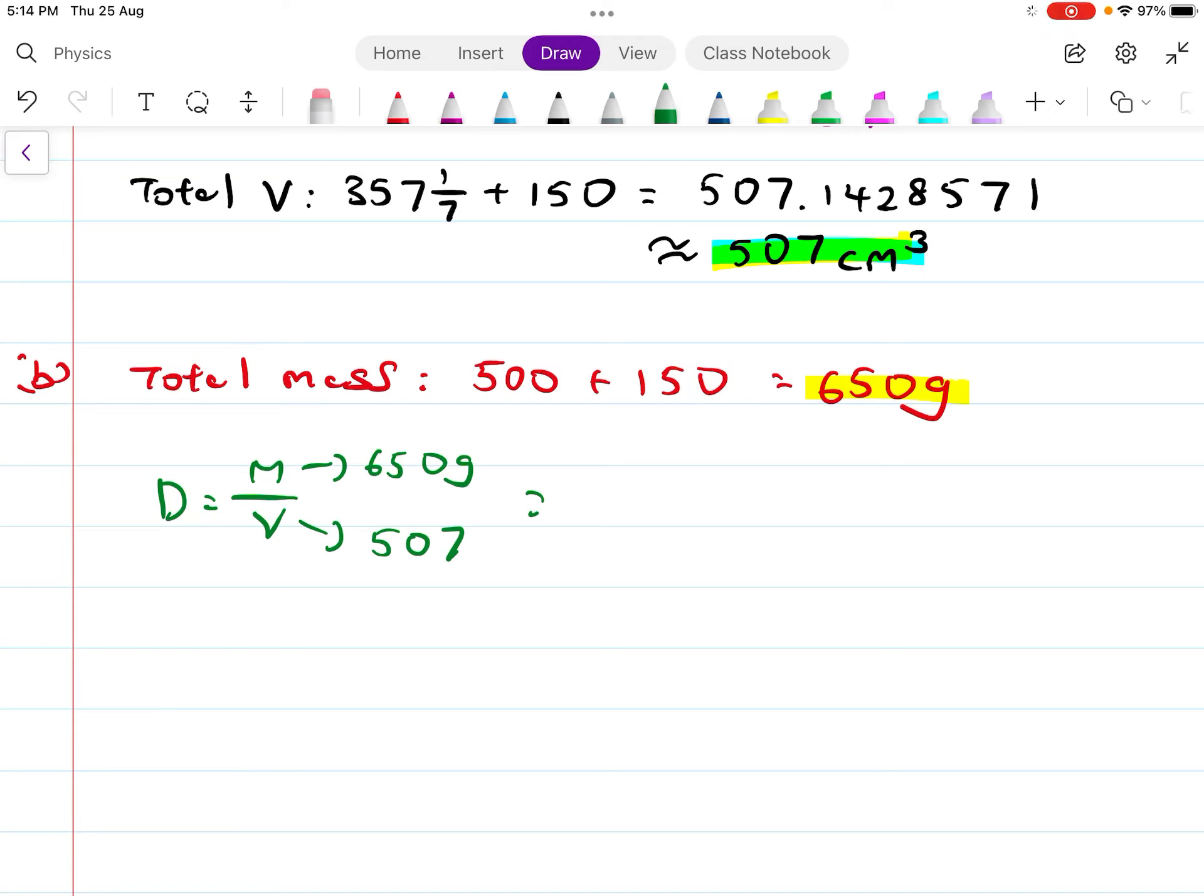You should get roughly 1.28 grams per cm³. Of course, they also round it up to 1.3. That's how we do this question.